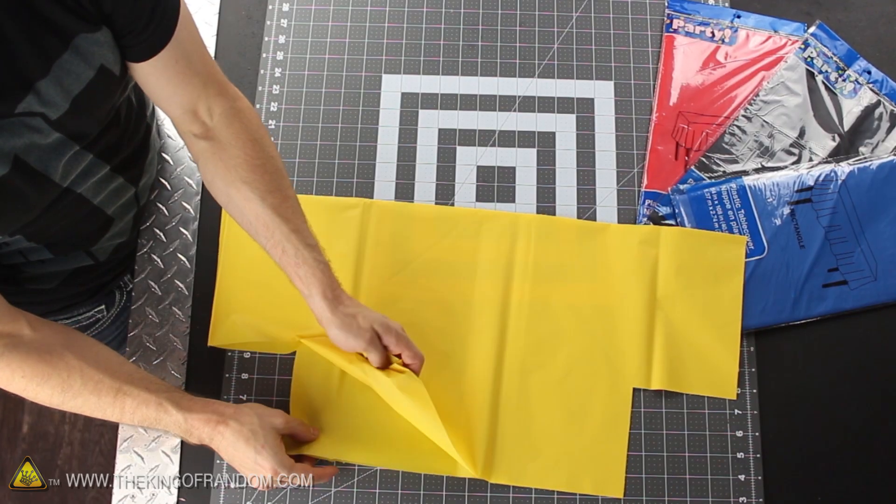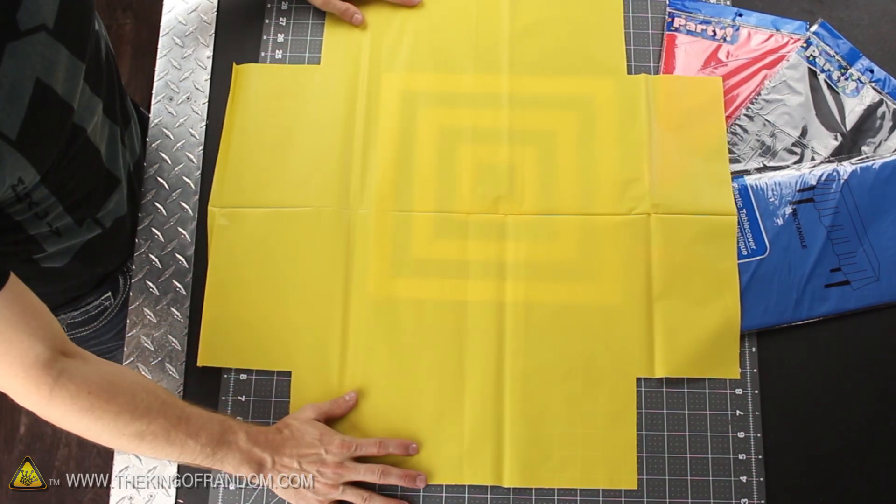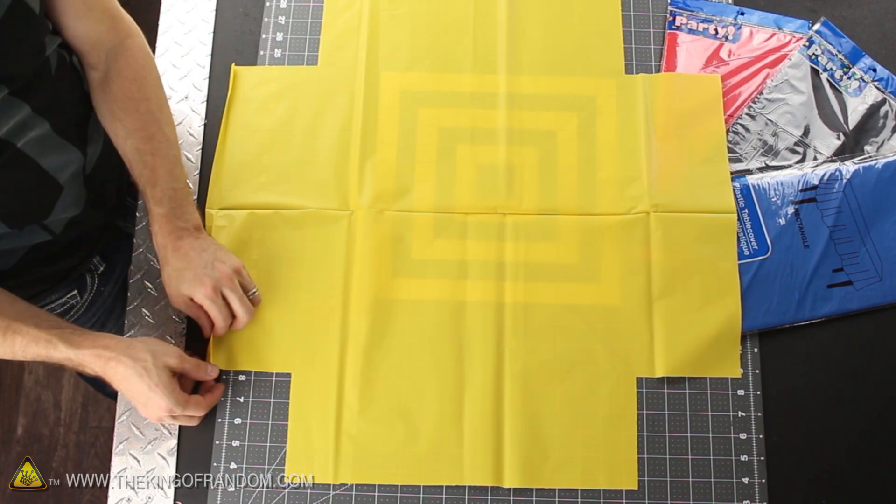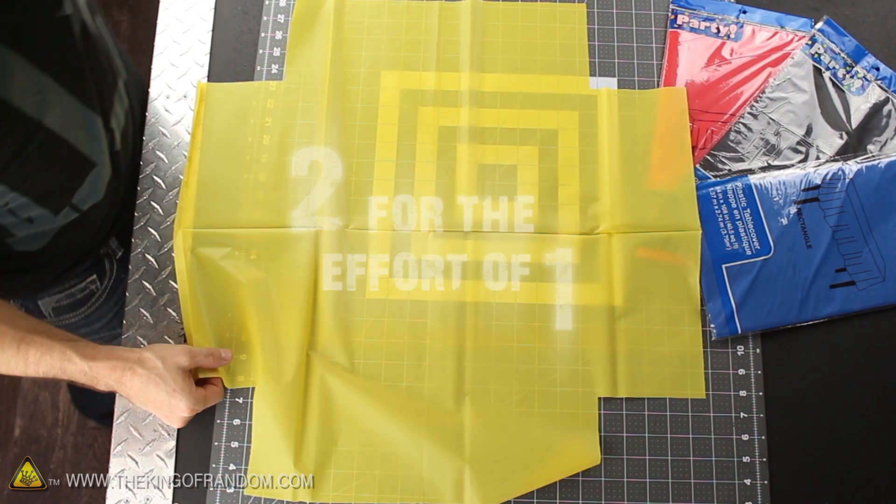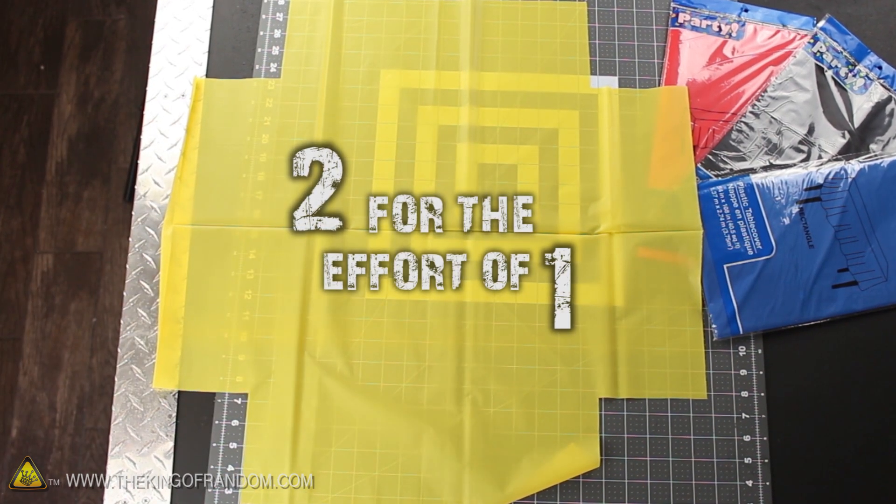If you unfold it again two more times, you should end up with a giant yellow cross. That's awesome, but check this out, there's actually another layer underneath, which means you just made two of them without even realizing it.